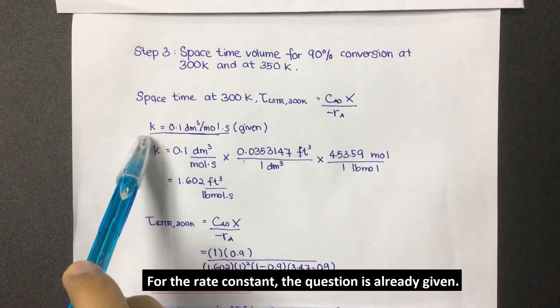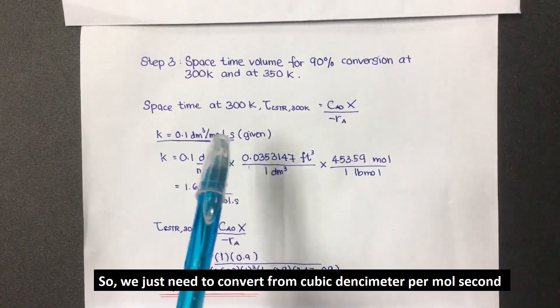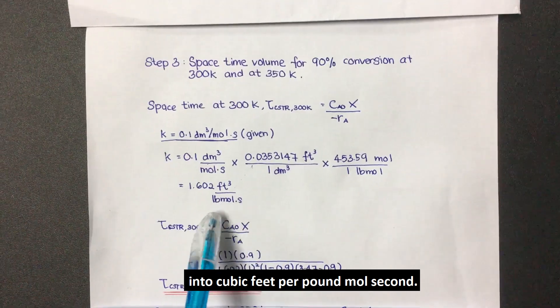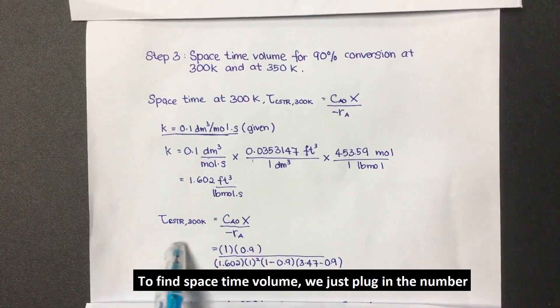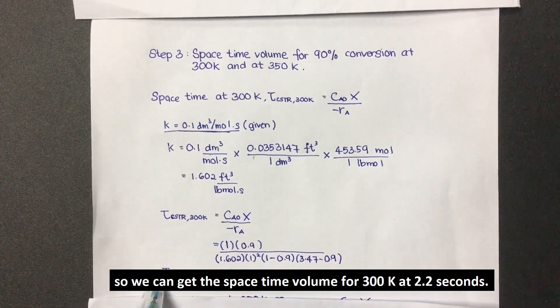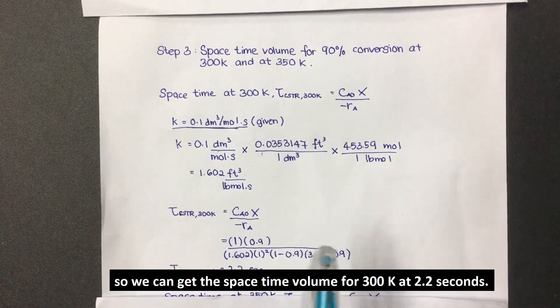For the rate constant, the equation is already given, so we just need to convert from cubic decimeter per mole second into cubic feet per pound mole second. To find space time volume, we just plug in the number into this formula. We can get the space time volume for 300K at 2.2 seconds.